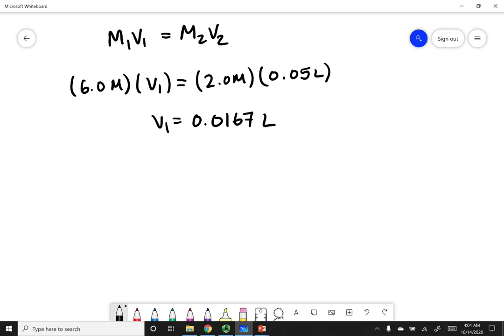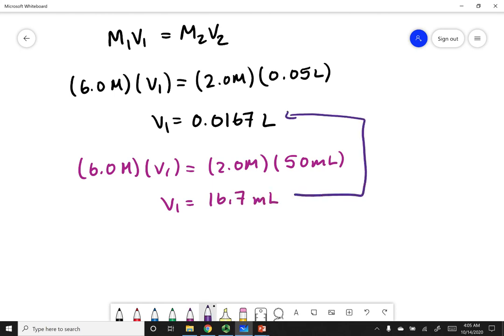Now I'm going to tell you guys right now, you could have run this calculation using milliliters. So 6.0 molar, V1 equals 2 molar, but instead of putting it in terms of liter, we're going to put 50 mLs. Now the only thing you have to worry about is if you input your volume in milliliters, then your answer is going to come out in milliliters. So if I do this calculation out, I get 16.7 milliliters, and you guys can see that you can convert from one to the other, and that these are the same volume.